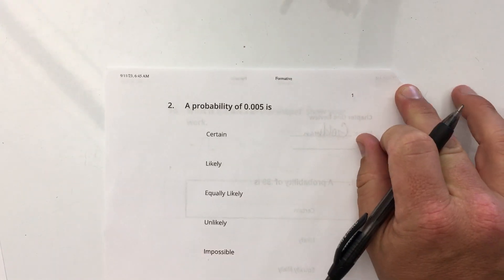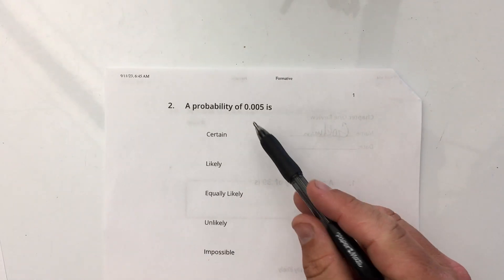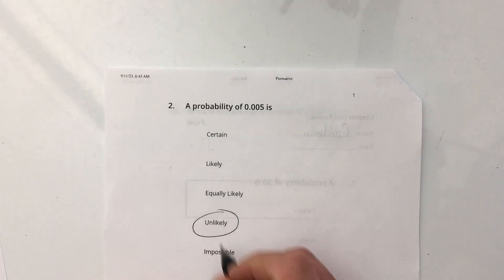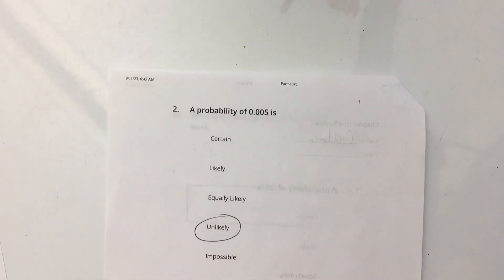0.005, it's not impossible. It's very small, but it's going to be unlikely, right? Because it is between 0 and 0.5.